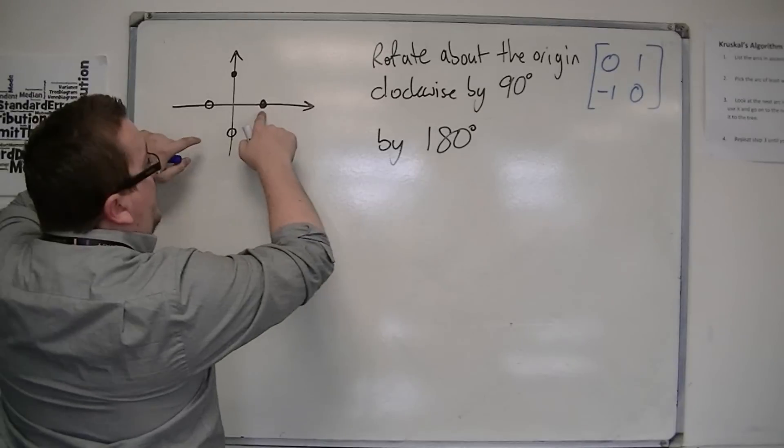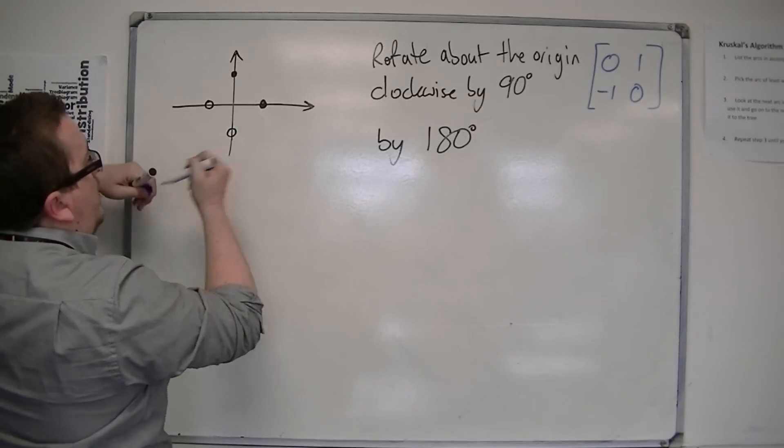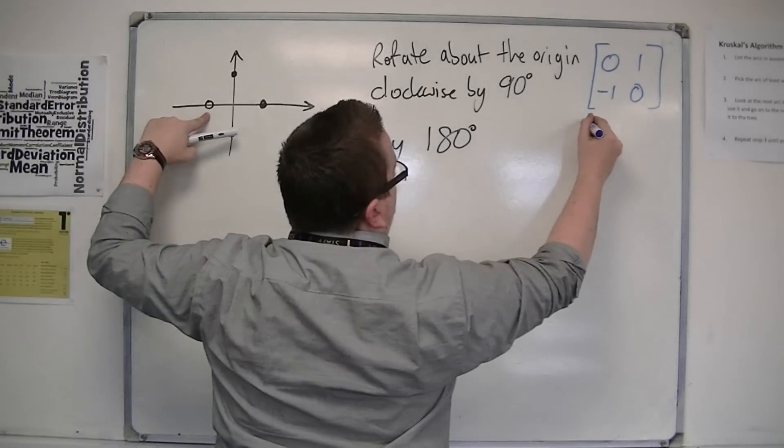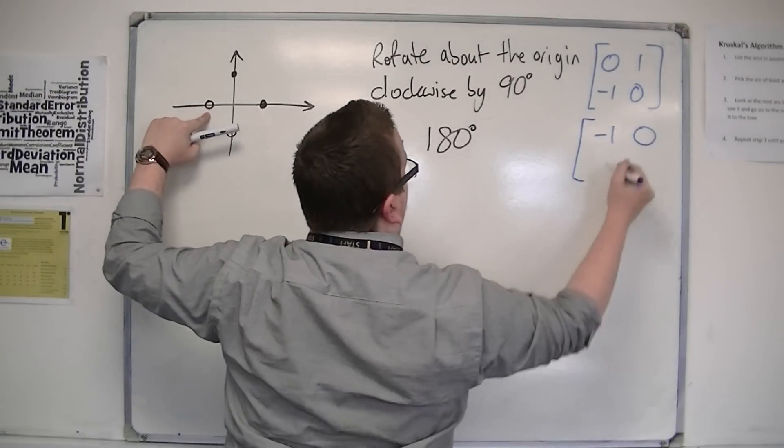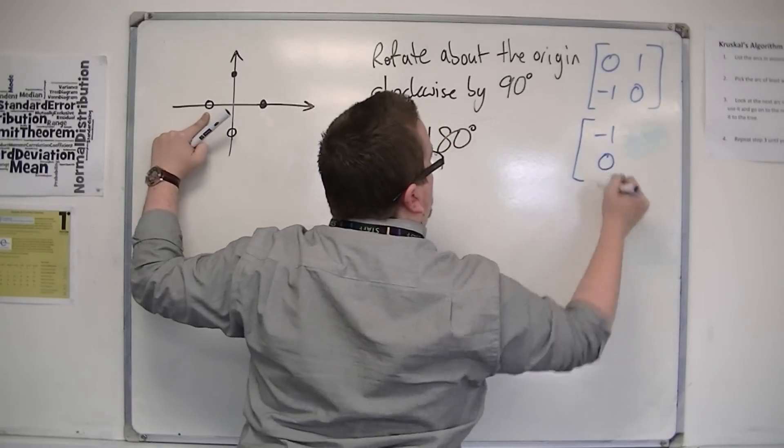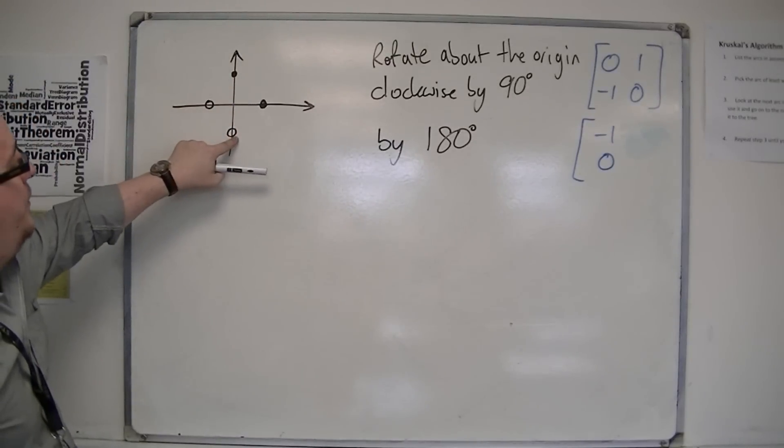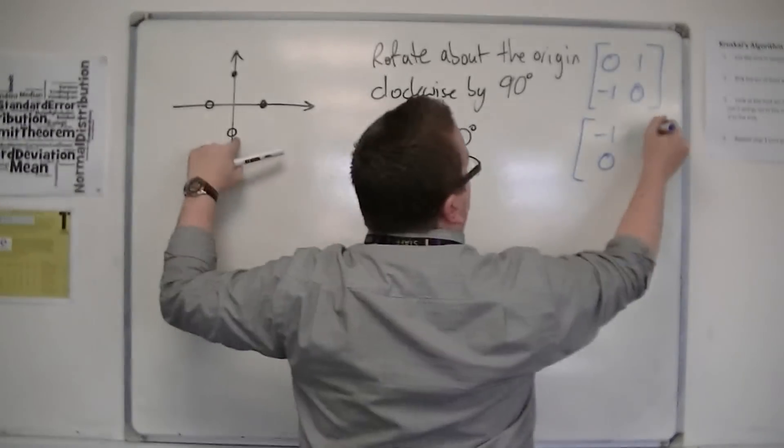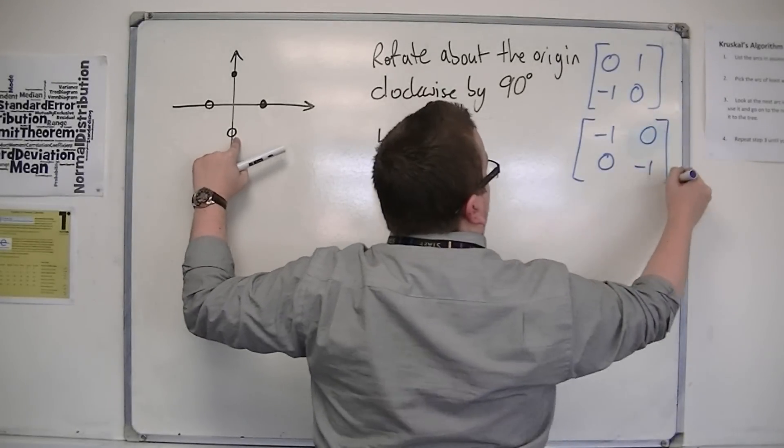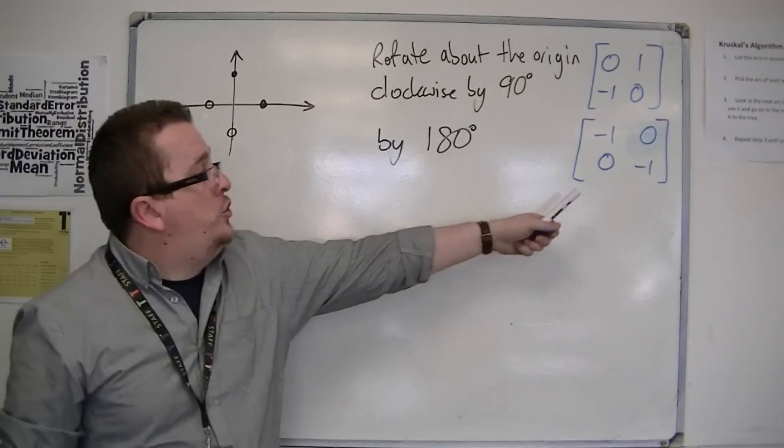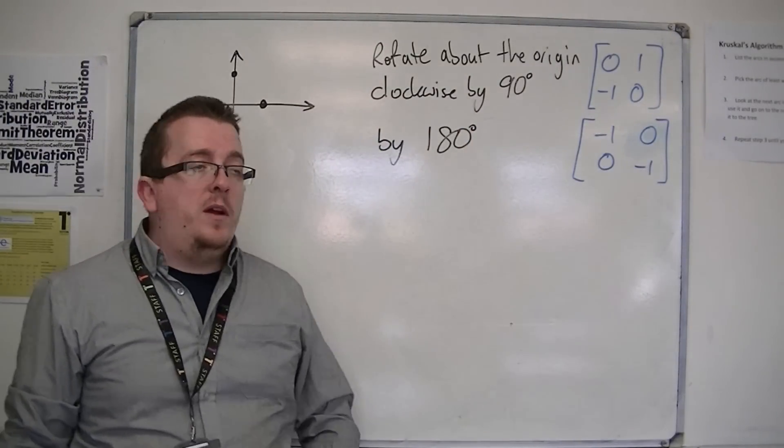So one zero has become minus one zero, and zero one has become zero minus one. So this is a rotation by 180 degrees about the origin.